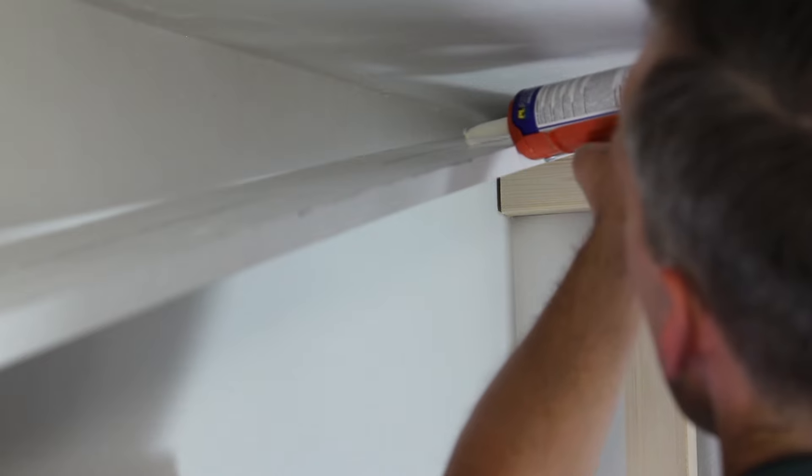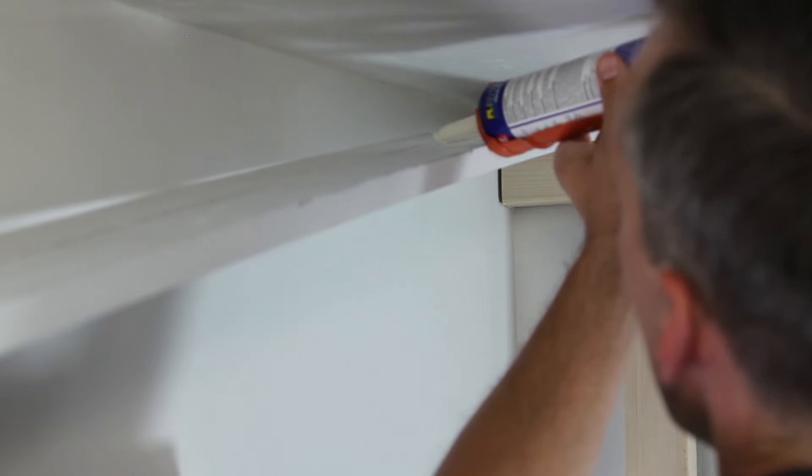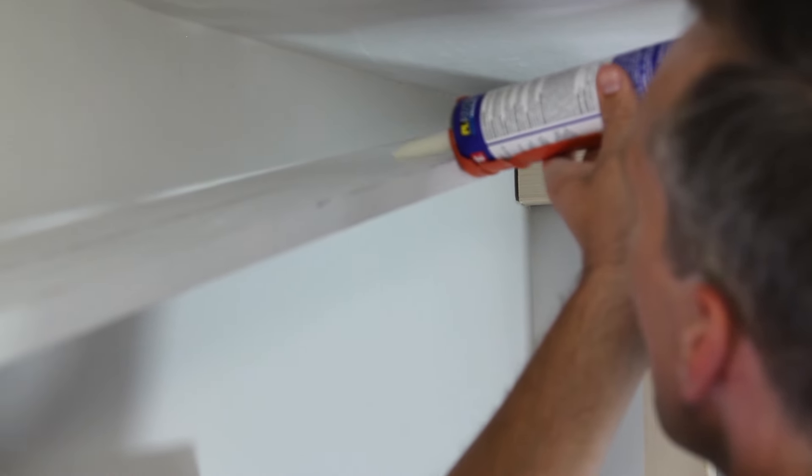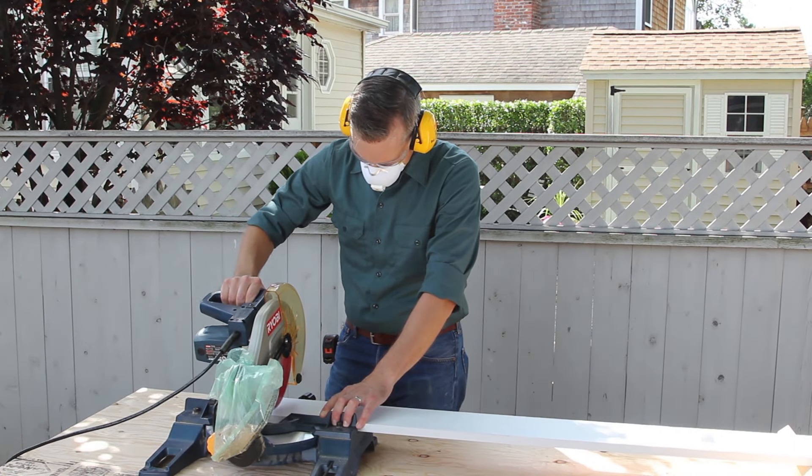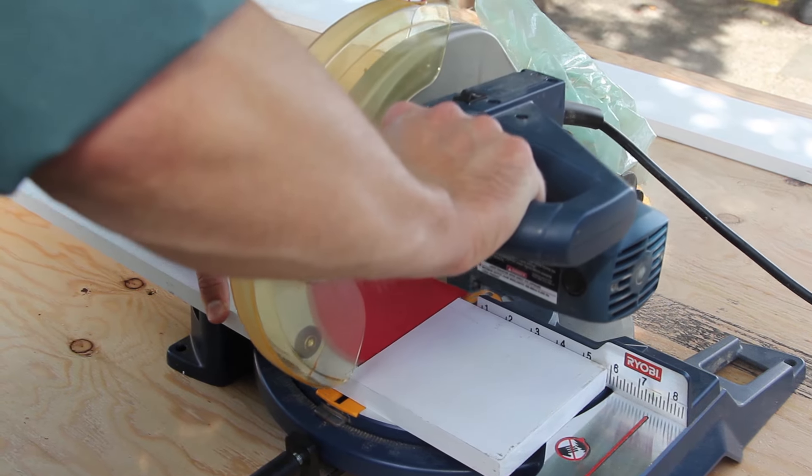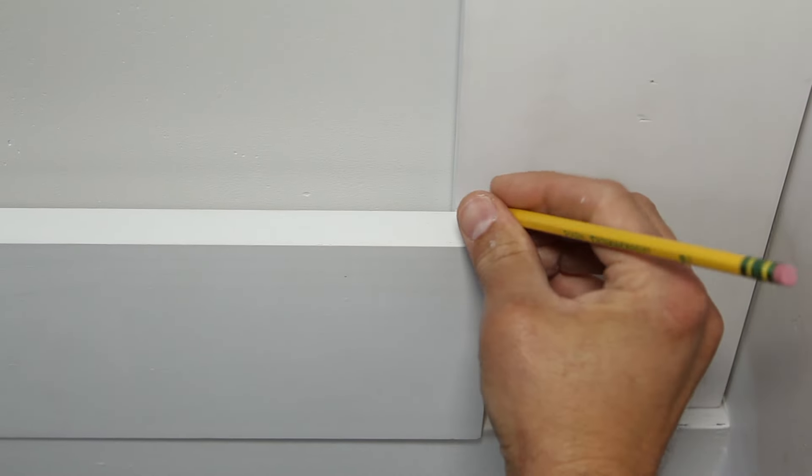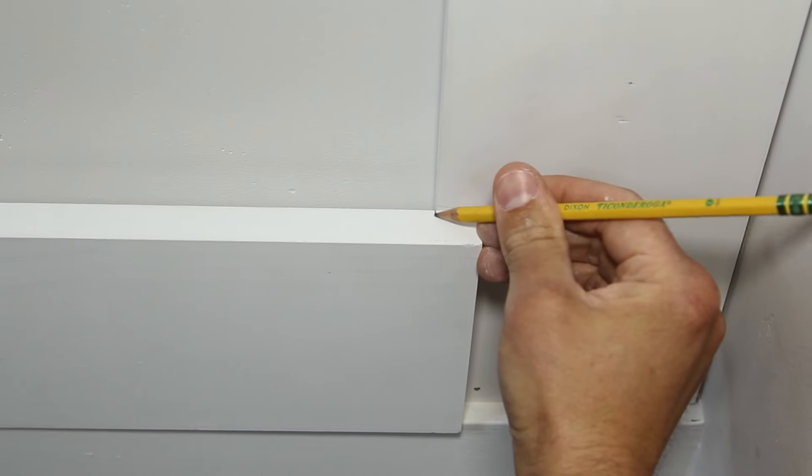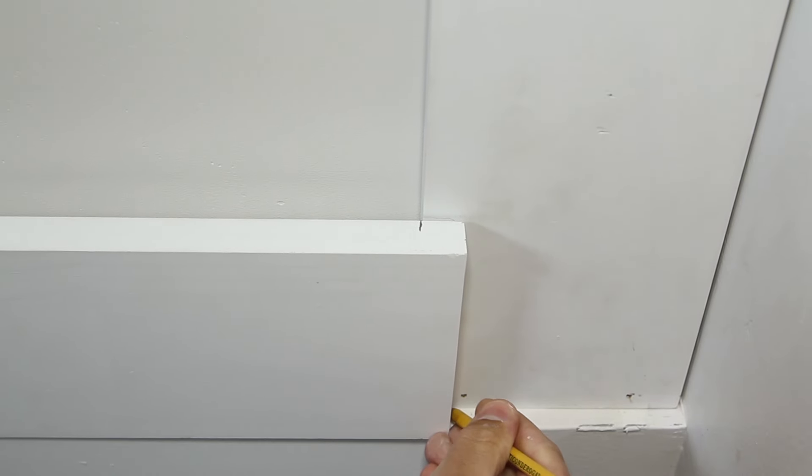Measure and cut the opposite perimeter beam and install it just the same way. For the perimeter cross beams, cut two boards several inches longer than you need. Use a dead man to hold a rough cut board overlapping the main beams at each end and mark one end where it crosses the beam.